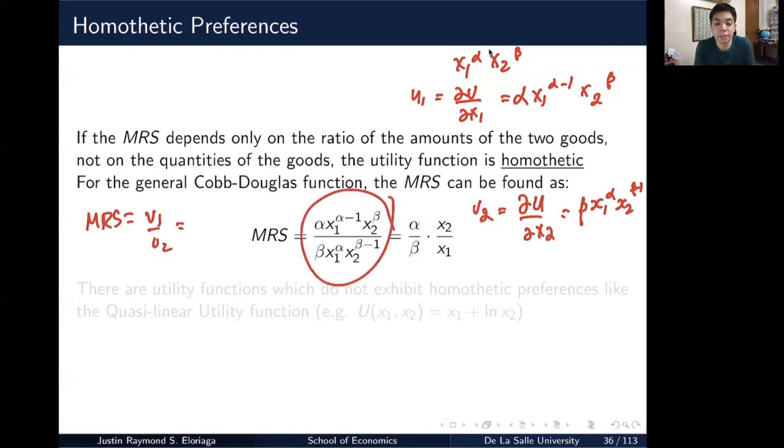So I'm left with this particular form here. Then I can just merely simplify it and it's in this form. So notice that it is homothetic in this case because it depends only on the ratio of the amounts of the two goods. Notice this is the ratio of the amounts, ratio of the amounts, not on a sheer quantity in and of itself. So it depends on the ratio of the amounts.